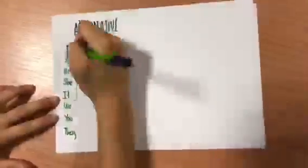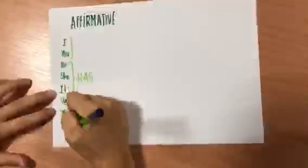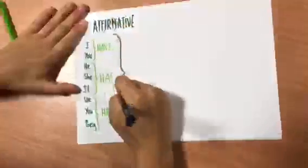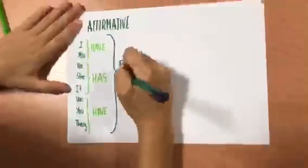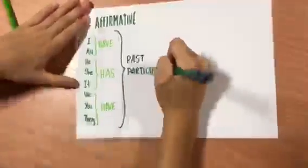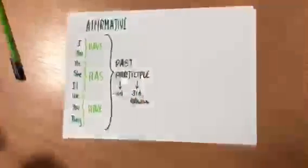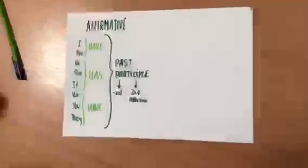To do the affirmative of the present perfect, we put I, you, we, and they with have, and with he, she, and it, we put has. Then we add the past participle. If the verb is regular, we add -ed. And if it's irregular, we have to learn the third column of the list.